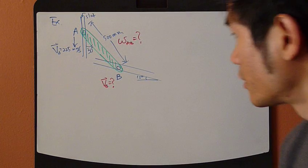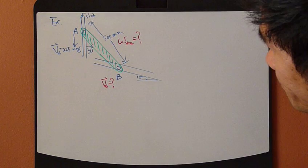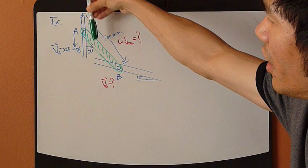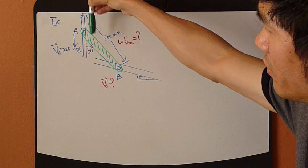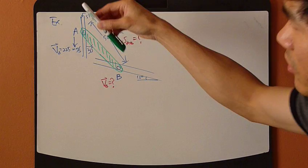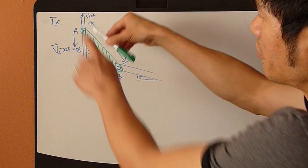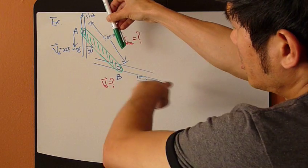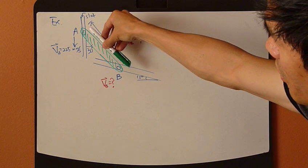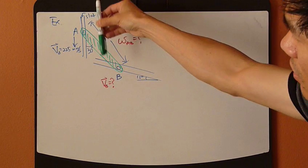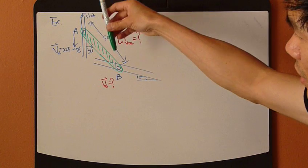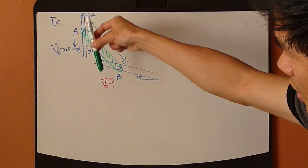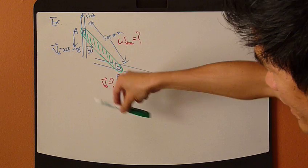So this rigid body right here, I can imagine, it kind of has this kind of motion. Because this end, point A, needs to follow the vertical slot, and this is constrained to this slot, it kind of has to go like that. So this rigid body AB has a general rigid body motion, because it's translating and rotating at the same time.